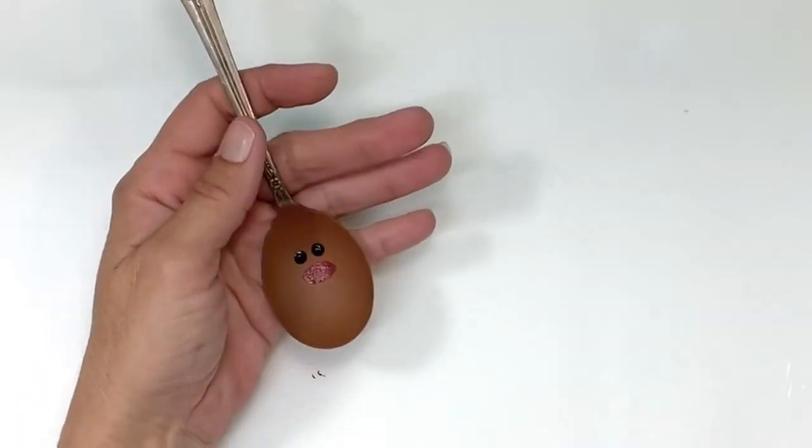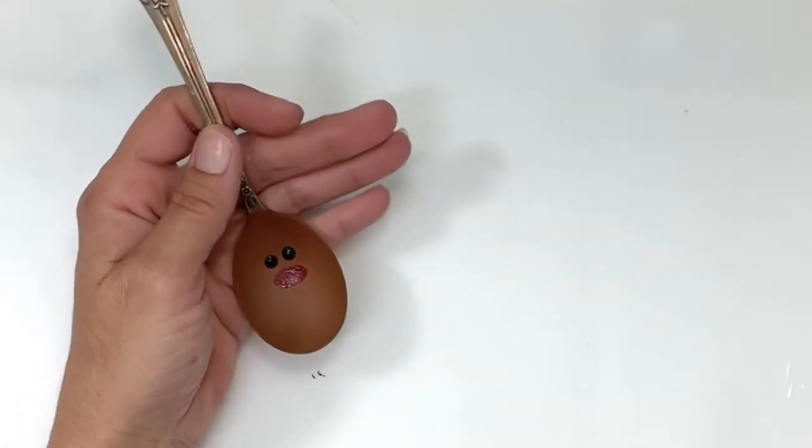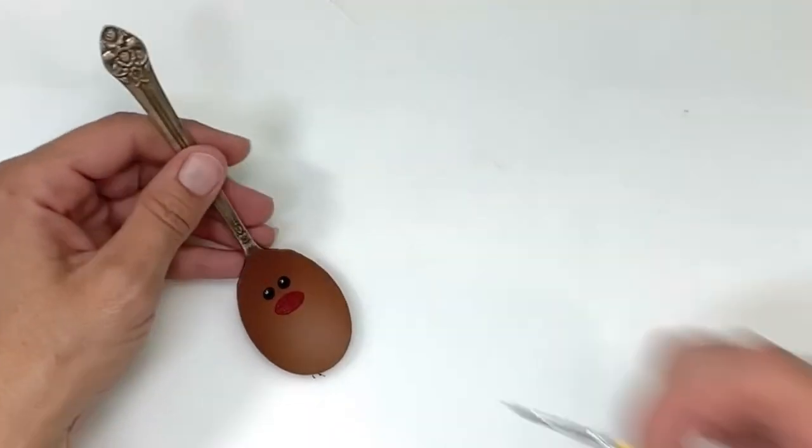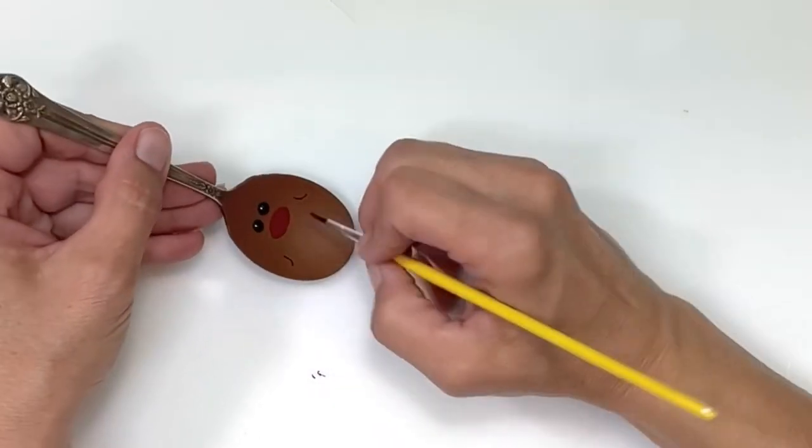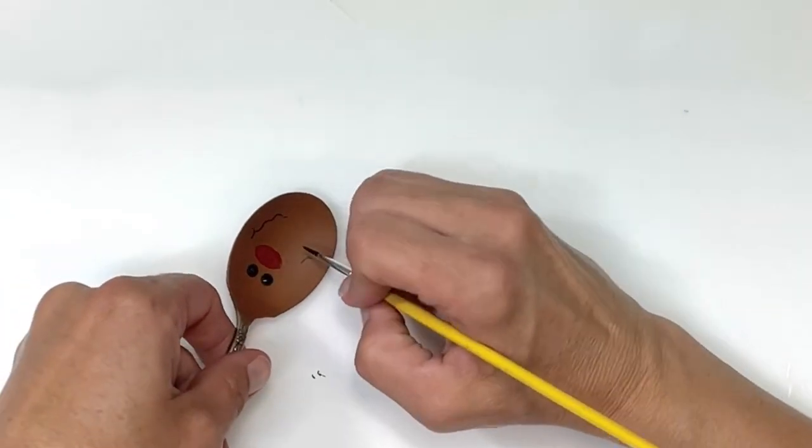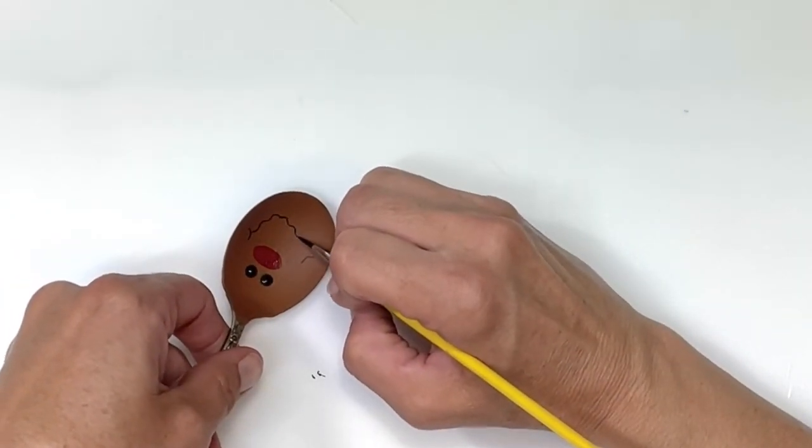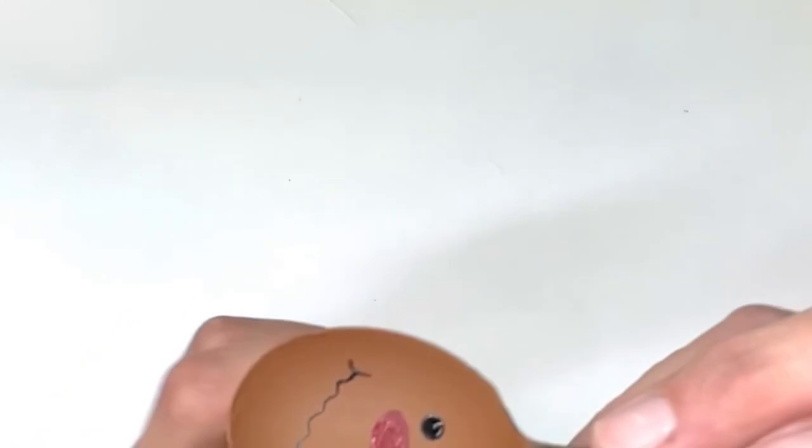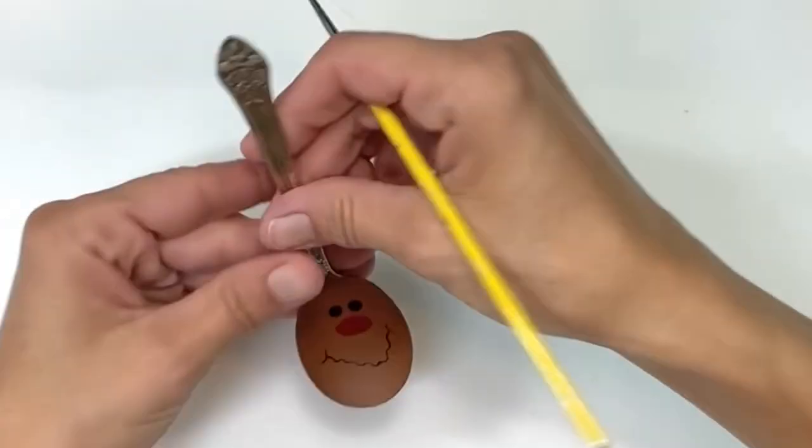Once I had the nose all on, I'm going to use the same skinny paintbrush to make his mouth. So I'm just going to do two little half circles and then make his mouth kind of like a squiggly line. And how cute already.